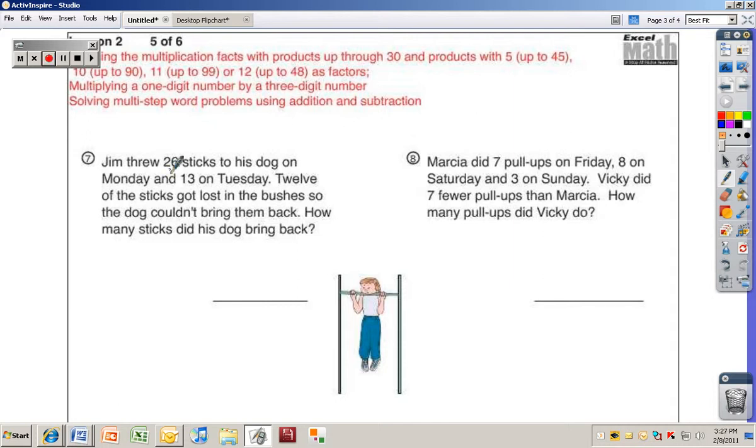Well, first of all, we have to know how many he threw. He threw 26 on Monday and 13 on Tuesday. So we're going to put 26 plus 13. Go ahead and write that on your paper and do this with me. That means he threw 39. But it tells us that 12 of them got lost. And that means that 12 went away from this number. So we're going to subtract 12.